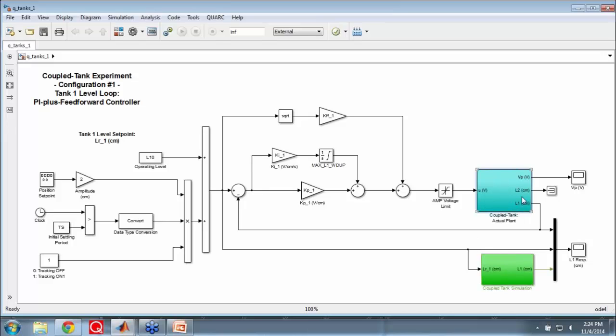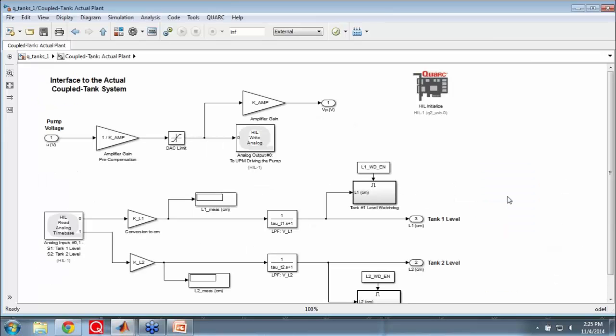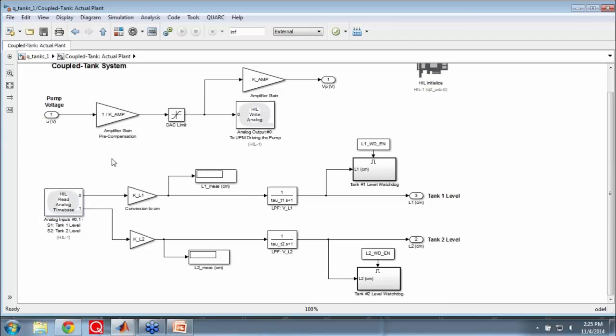We're running both the... You'll also note that in the blue, this is the actual plant. These are, if I double click on this, the I/O blocks in Quark. I have HIL Write Analog and HIL Read Analog Timebase. These two blocks interface with the data acquisition device, which then talks to the coupled tanks. My HIL Write Analog spits out my control signal to the DAC, which goes to the amplifier, which applies the voltage to the pump. The HIL Read Analog Timebase reads my A to D, so it reads my analog input signals from the pressure sensors. You convert your pressure to a level in centimeters, and that gets passed through two filters. We also have two safety watchdogs, tank number one level watchdog and tank number two level watchdog. These are safety watchdogs imposed just in case the level does go above a certain threshold, like 27 centimeters or something, then Quark stops automatically. You avoid any spillover.